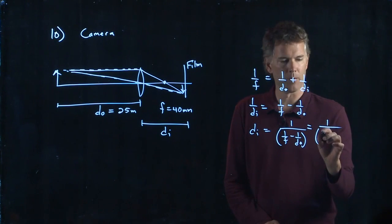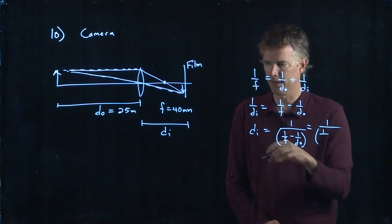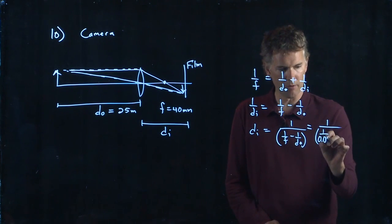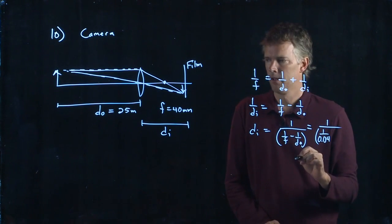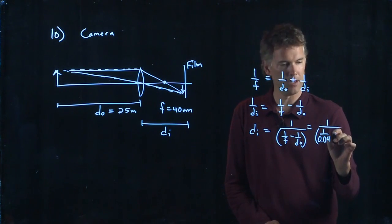So 1 over F, we've got 1 over 40 millimeters. Put everything in meters, so that's 0.04. And then DO is 25 centimeters.